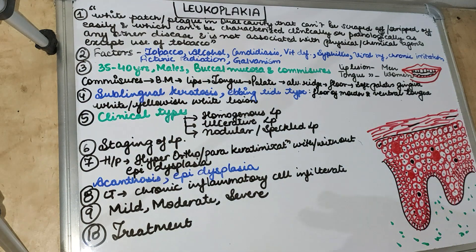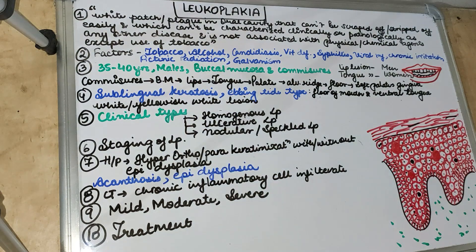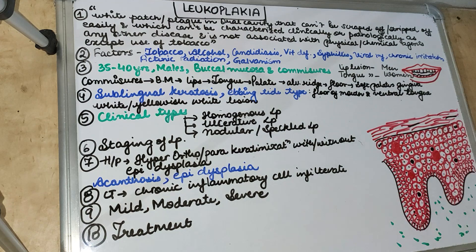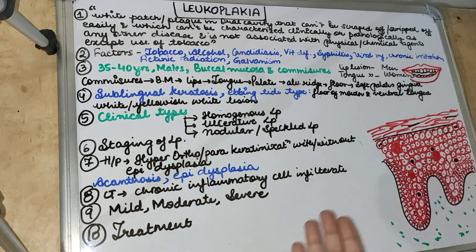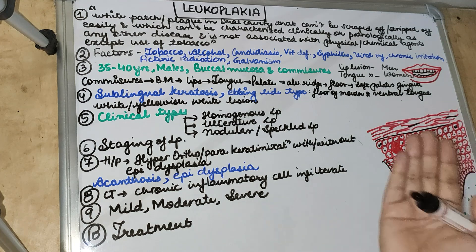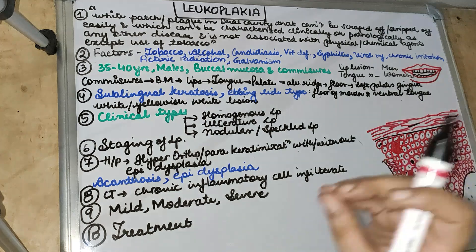The predisposing factors for leukoplakia include tobacco, alcohol, candidiasis, vitamin deficiency — A and B complex deficiencies — syphilis, viral infection, HSV virus, chronic irritation from ill-fitting dentures, actinic radiation, and galvanization due to dissimilar metals. All these are predisposing factors which can lead to leukoplakia.